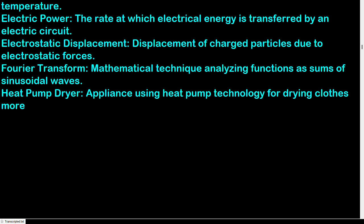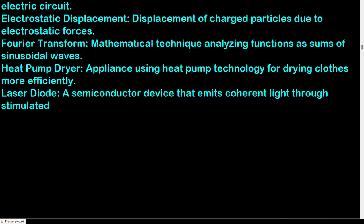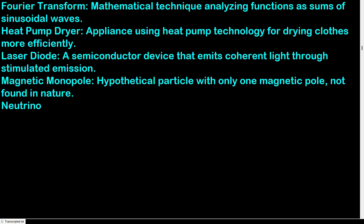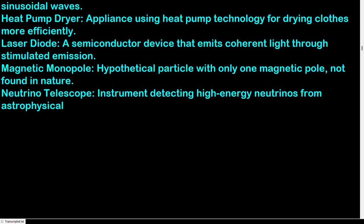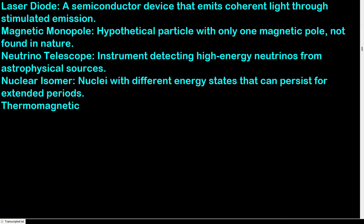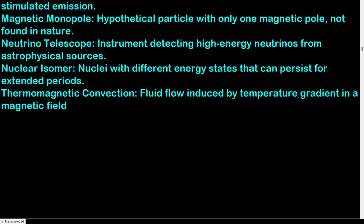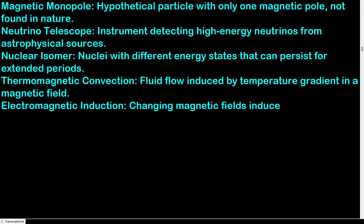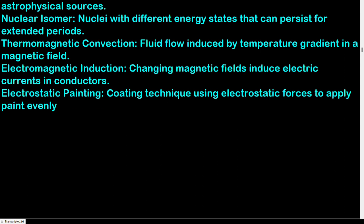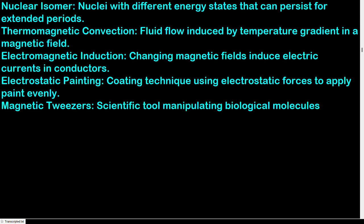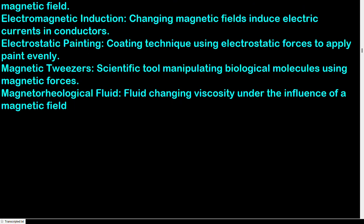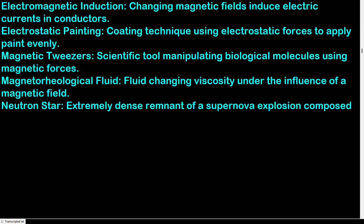Heat pump dryer: appliance using heat pump technology for drying clothes more efficiently. Laser diode: a semiconductor device that emits coherent light through stimulated emission. Magnetic monopole: hypothetical particle with only one magnetic pole, not found in nature. Neutrino telescope: instrument detecting high-energy neutrinos from astrophysical sources. Nuclear isomer: nuclei with different energy states that can persist for extended periods. Thermomagnetic convection: fluid flow induced by temperature gradient in a magnetic field. Electromagnetic induction: changing magnetic fields induce electric currents in conductors. Electrostatic painting: coating technique using electrostatic forces to apply paint evenly. Neutron star: extremely dense remnant of a supernova explosion, composed mostly of neutrons.